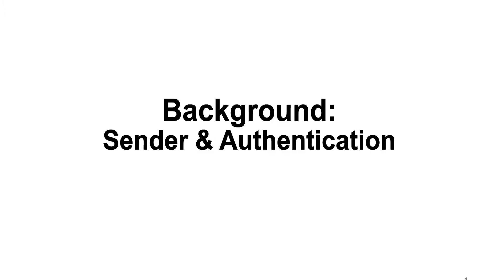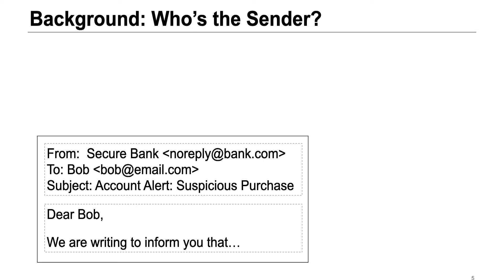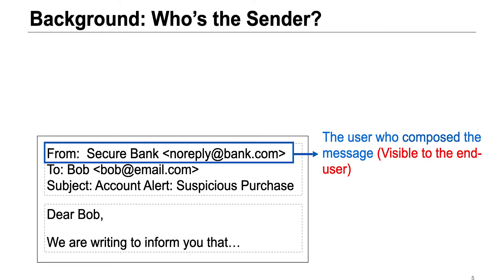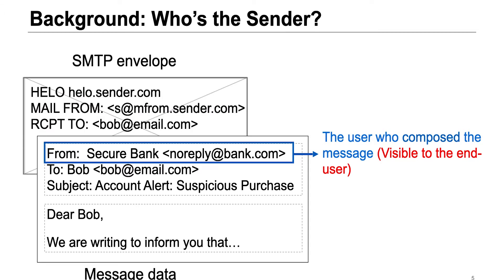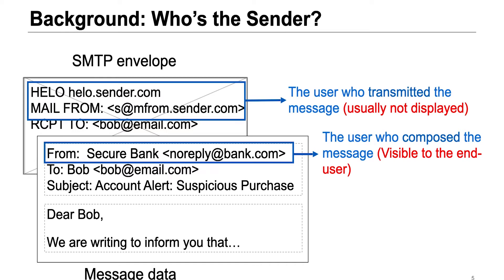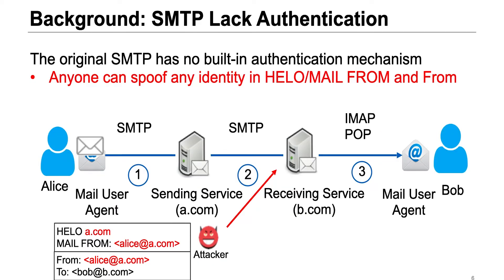To understand this attack, we need to know two important concepts in the email protocol: sender and authentication. The from address we often see only represents the user who composed the message. There is another variable part called the SMTP envelope. The HELO and MAIL FROM address in the SMTP envelope represents the user who transmitted the message. This design is similar to mail in real life — the address in the envelope and the address in the message data can be different. When SMTP was originally designed, it had low built-in authentication mechanisms. Anyone on the internet can claim others' address in HELO, MAIL FROM, or FROM field. For example, an attacker can claim he is alice@a.com and send a spoofing email to Bob's receiving service directly, and the receiving service cannot tell whether the email sender is really alice@a.com.